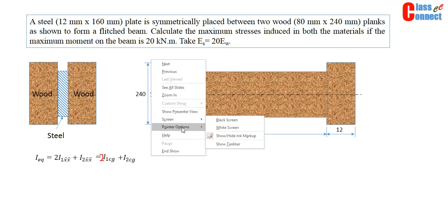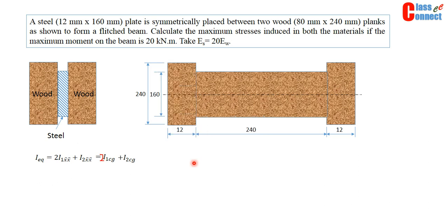So we can find out the value. If we substitute this, it is 80, 240 and 240, 260. This is the second one and this is the first one. The total value is given by 266,240,000 mm raised to power 4.